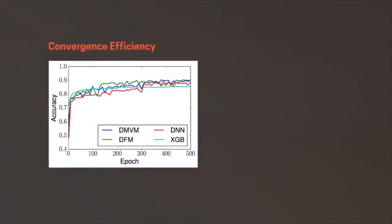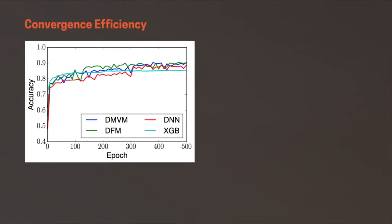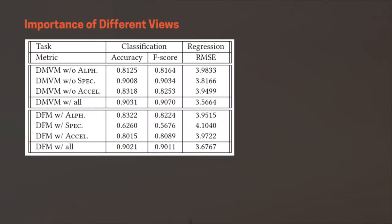In addition, we compare the convergence efficiency of different fusion strategies. We also find that metadata from alphanumeric key presses are the best individual predictors of mood states, compared to the other views.